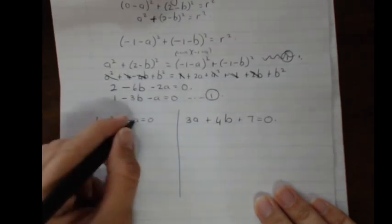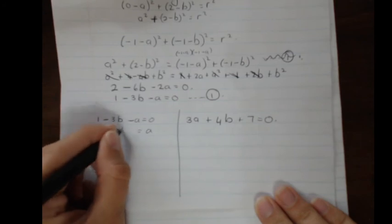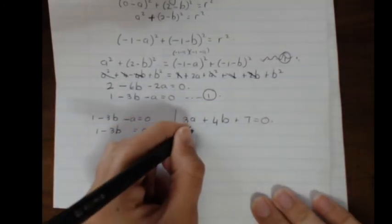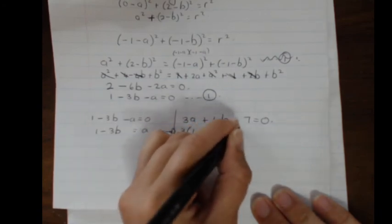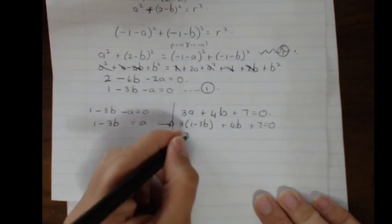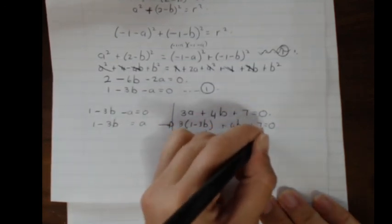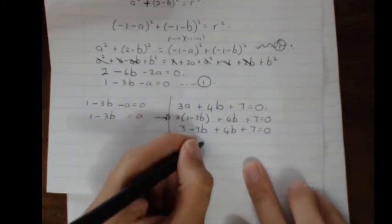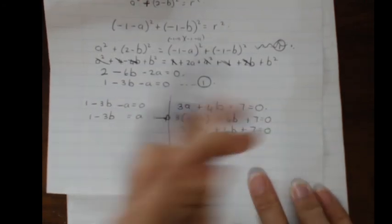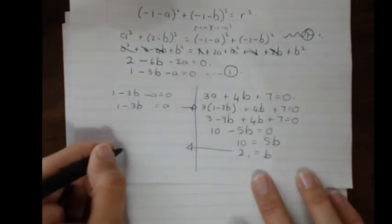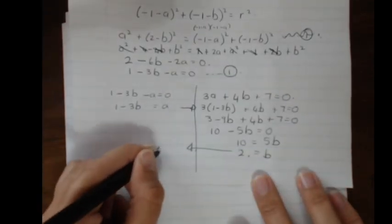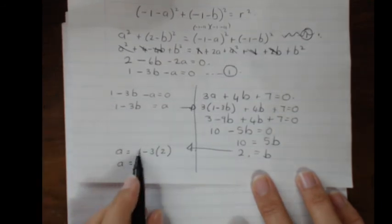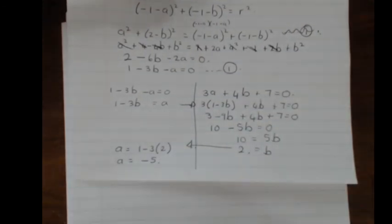From the first equation: a equals 1 minus 3b. Substituting into 3a plus 4b plus 7 equals zero: 3(1 minus 3b) plus 4b plus 7 equals zero, giving 3 minus 9b plus 4b plus 7 equals zero, so 10 minus 5b equals zero, meaning b equals 2. Then a equals 1 minus 3 times 2, so a equals negative 5. The center of the circle is at (-5, 2).